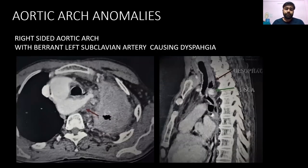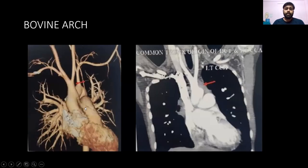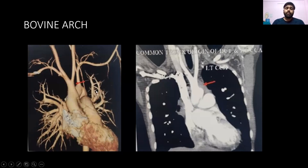Aortic arch anomalies are the most common great vessel anomalies. Here is a case of right-sided aortic arch — as you can see, the arch arises to the right of the trachea with an aberrant left subclavian artery, which is compressing the esophagus and causing dysphagia. Bovine arch is the most common congenital variant of the aortic arch, characterized by the common origin of the right brachiocephalic trunk and left common carotid artery.